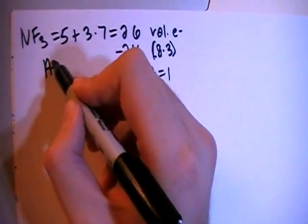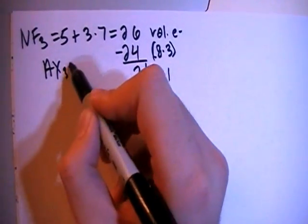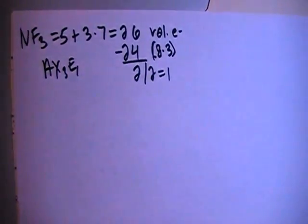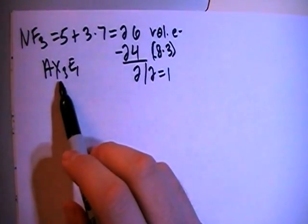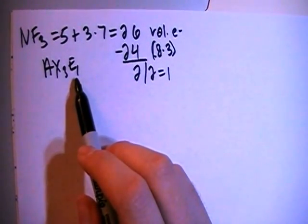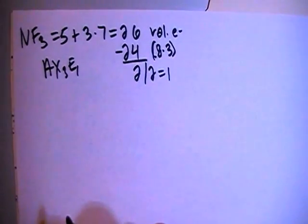that means that this is going to be an AX3E1 structure meaning that there is a central atom surrounded by 3 peripheral atoms and 1 non-bonding pair of electrons are on that central atom, okay?